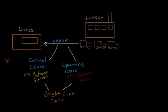For example, if the present value of the minimum lease payments is 90% or more of the fair value of the asset, it's called a capital lease and gets put on the balance sheet. But if it's 89%, it's an operating lease and remains off-balance sheet.